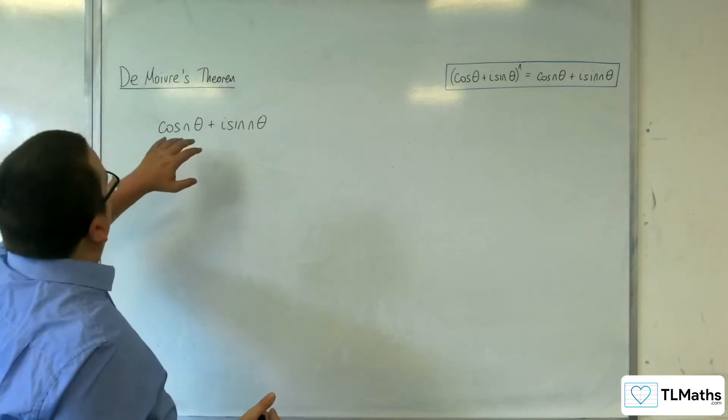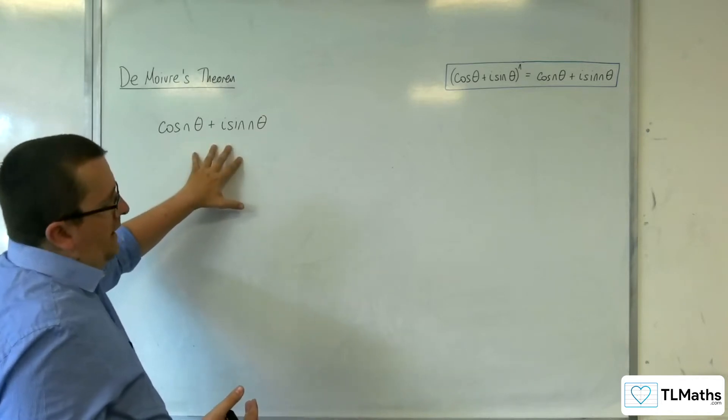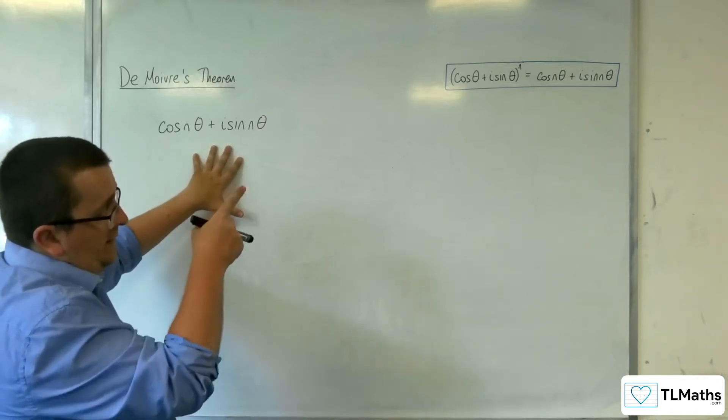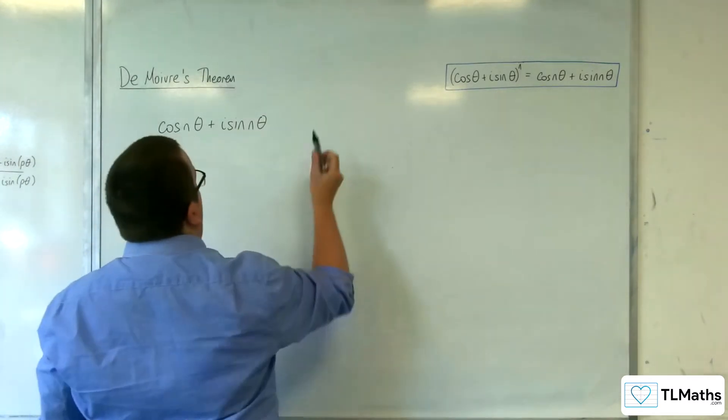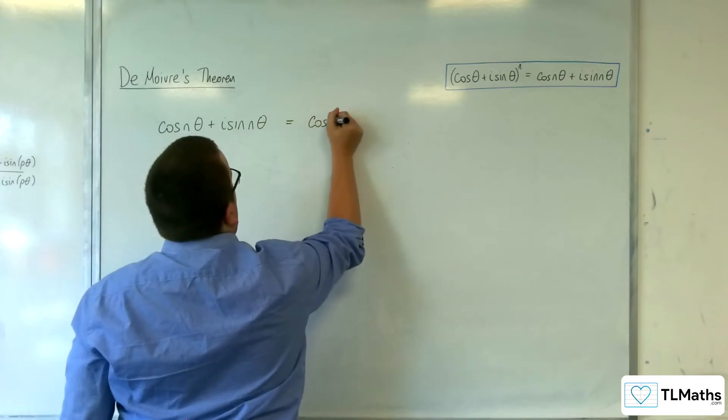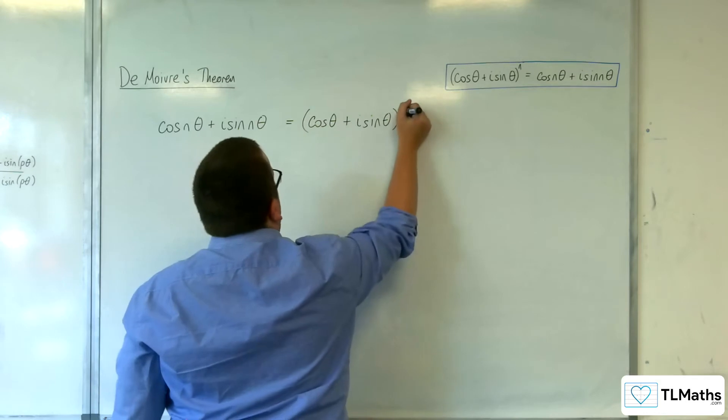So, let's say you've got cosine n theta plus i sine n theta. Now we know that that is equal to cosine theta plus i sine theta to the power of n. That is De Moivre's theorem after all.